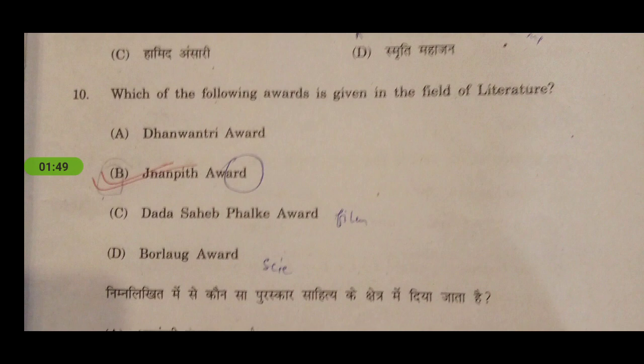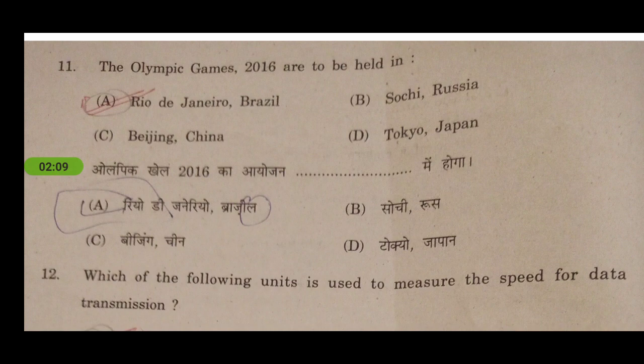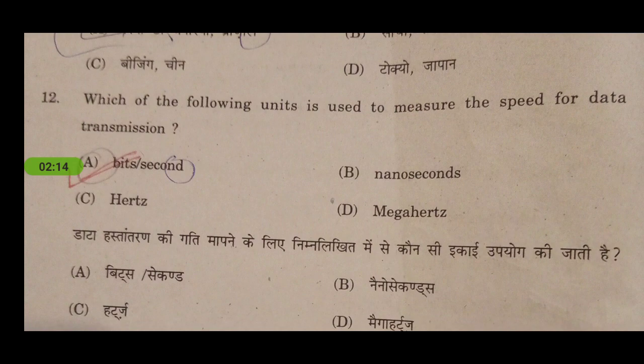Next: who was given the field of literature award? The answer is John Peter, while other awards include the Dhanvantri award given in medicine, the Dadasaheb Phalke award for films, and the Borlaug award given in science. Next: the Olympic Games 2016 were to be held in Rio de Janeiro, Brazil.